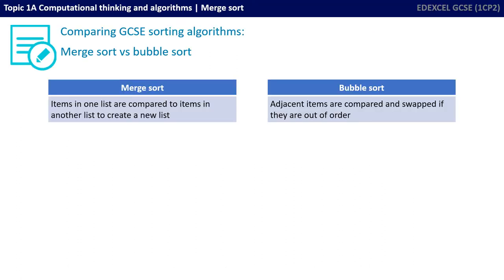On the left-hand side we have the merge sort and on the right the bubble sort. With a merge sort, items in one list are compared to items in another list to create new lists. With a bubble sort, adjacent items are compared and swapped if they're out of order. A merge sort is typically a very quick sort algorithm, whereas the bubble sort is typically quite slow.